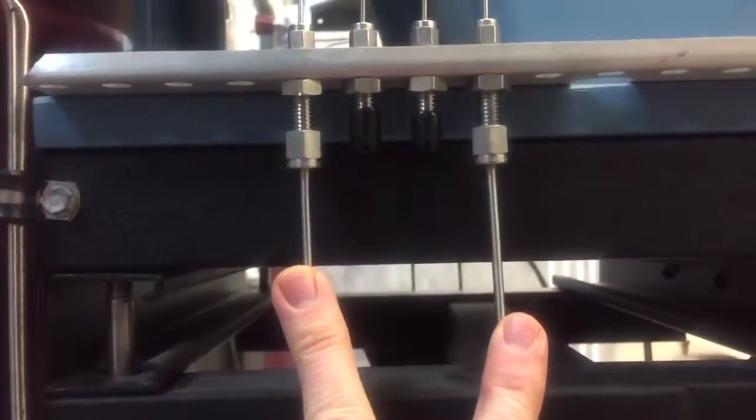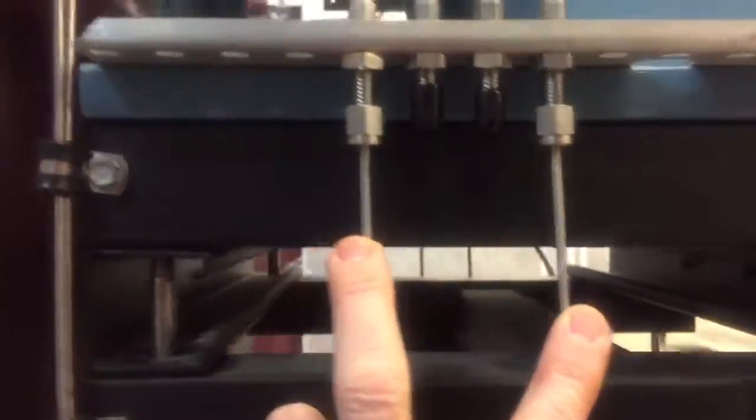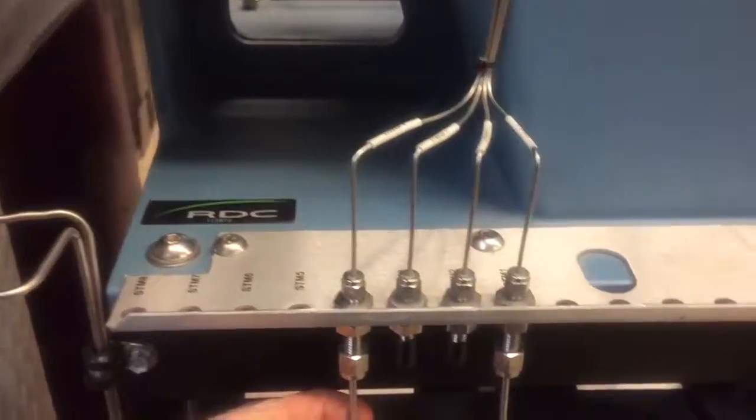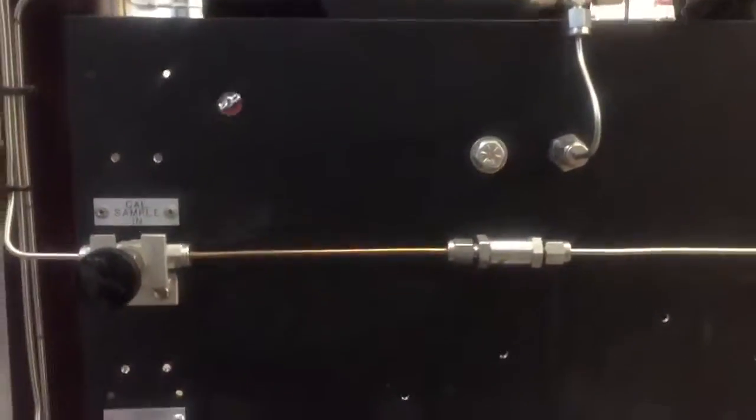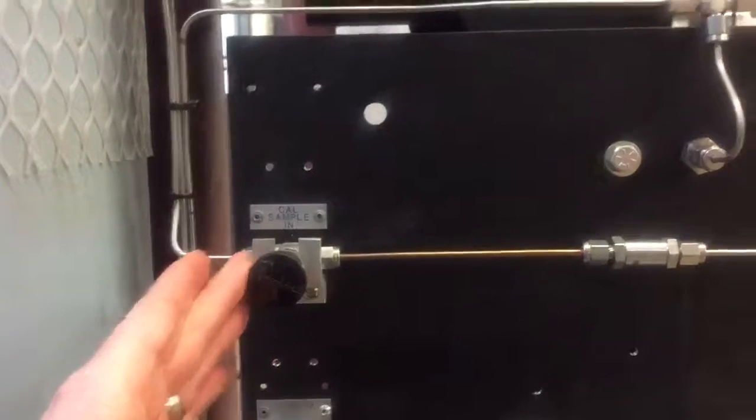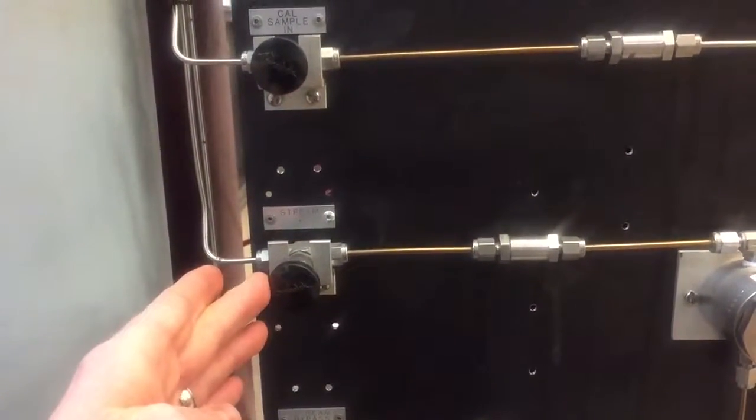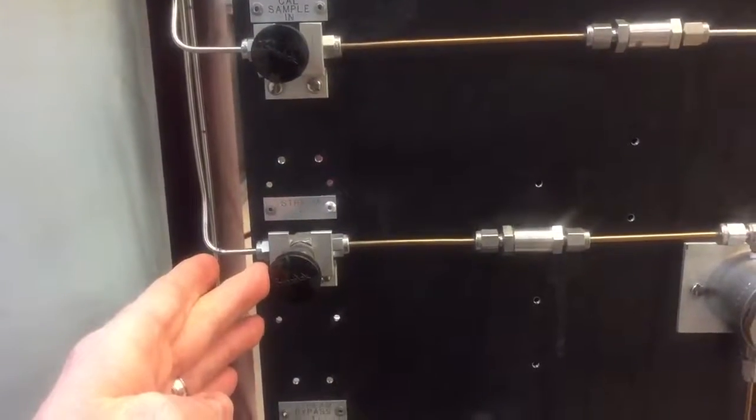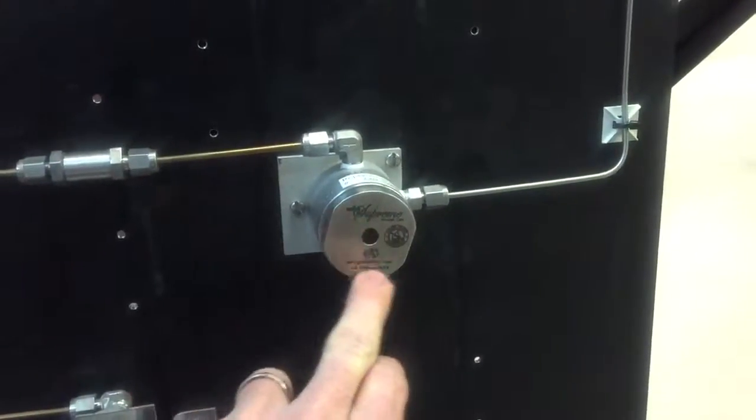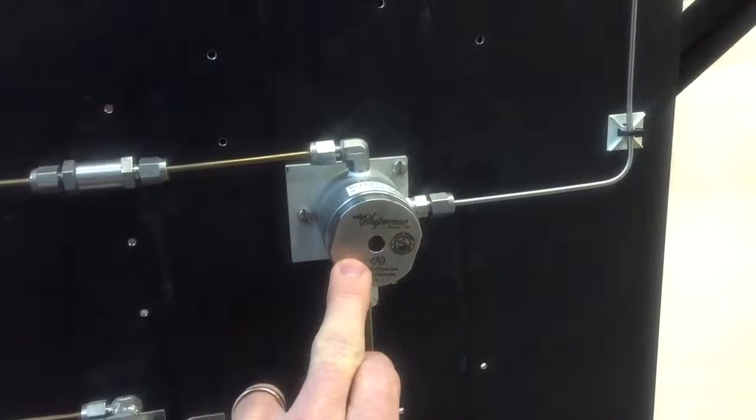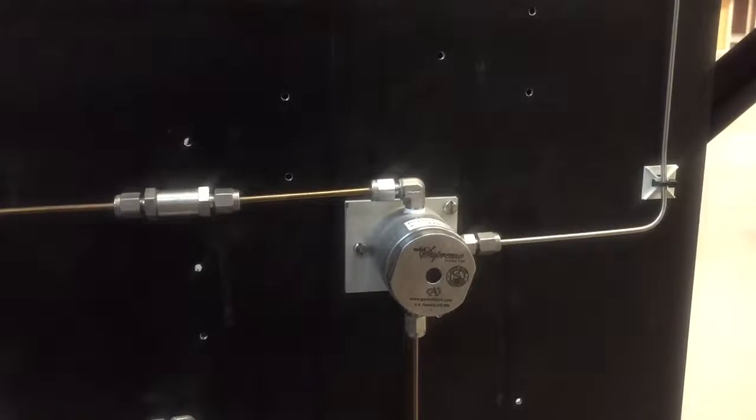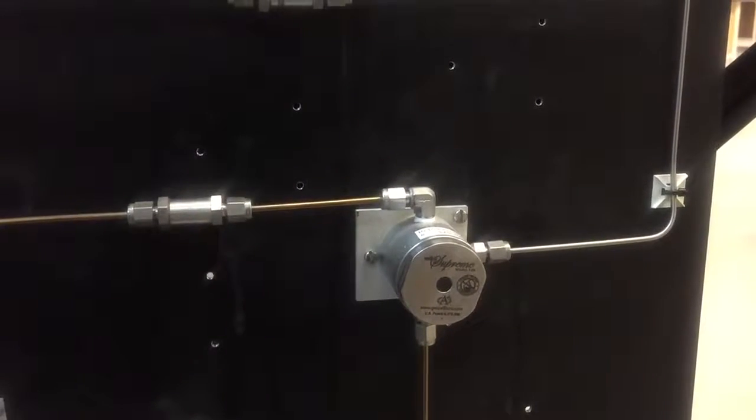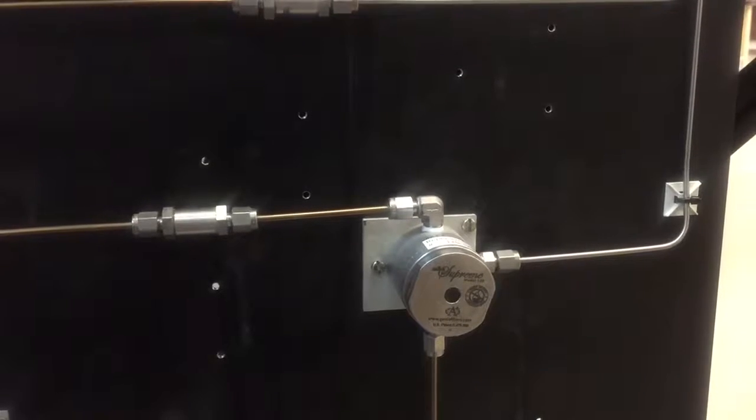There's only the two streams hooked up. We have one for the calibration gas here on stream four, and on stream one, this is for our live sample of natural gas. What you'll notice that's different between our cal sample in and our stream one where our natural gas flows in, they both have a check valve, but this guy has a G supreme filter to filter out any possible dust or dirt or anything that could get into our analyzer and chromatograph and cause issues. We want to protect it from that.